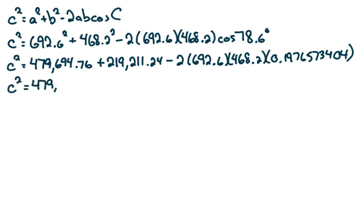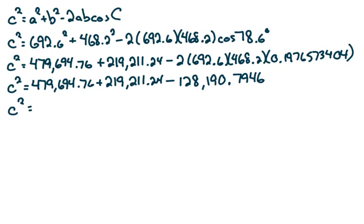I'm just going to copy down these first two terms. And then I'll work out the last one. 2 times 692.6 times 468.2 times 0.197, etc. would give us minus 128,190.7946. Combining all those terms on the right will give us 570,715.2054.